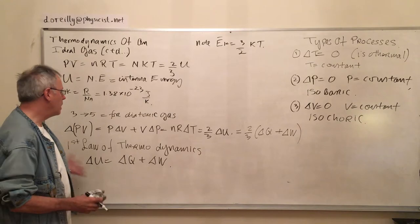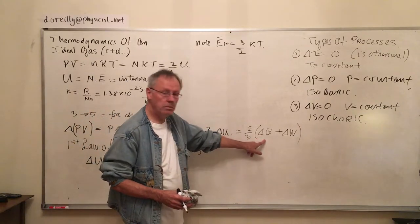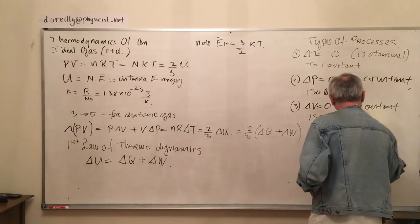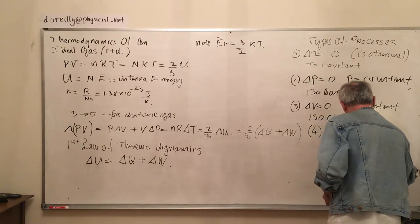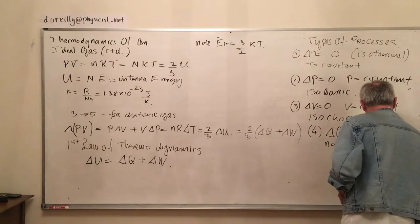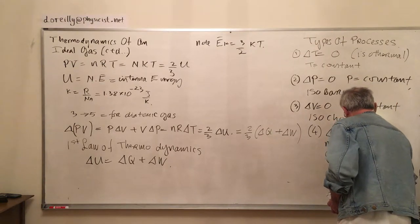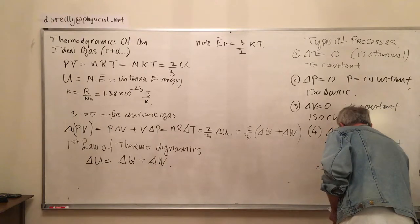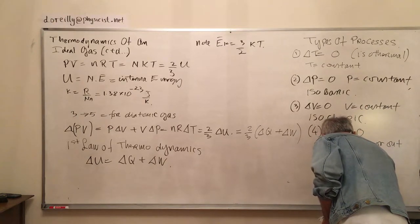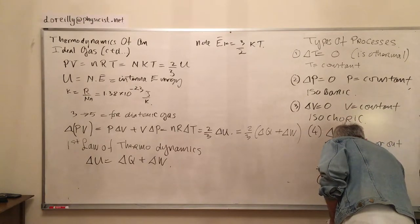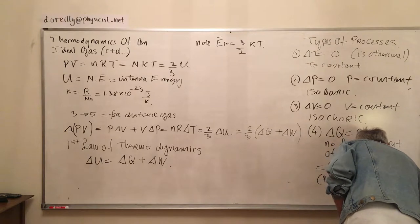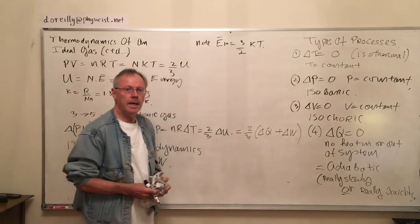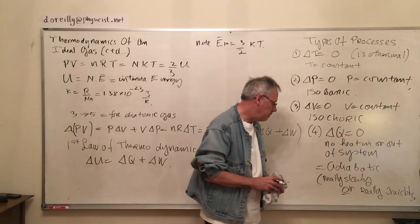What else can we set to zero? Well, we can set delta Q to zero. When we set delta Q equals zero, we're saying that no heat enters or leaves the system. It's said to be adiabatic. What does that mean?